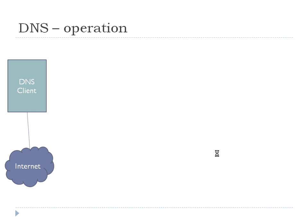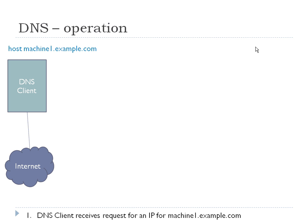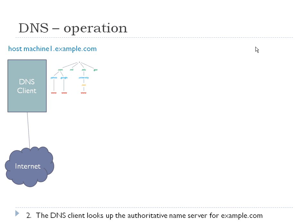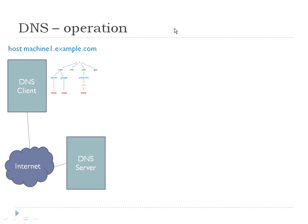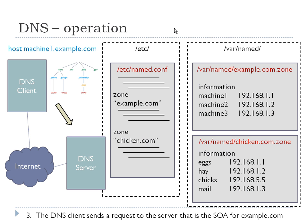Let's talk about operation. We have a DNS client connected to the internet. A machine is using this DNS client — the client could be a server that is a preferred DNS for somebody. It says: 'host machine1.example.com'. The DNS client receives a request for an IP on example.com. Assuming it is not cached, it's going to look up the authoritative name server for example.com in the hierarchy of DNS, just like the last video showed. It goes through the hierarchy and finds who is the SOA for example.com.